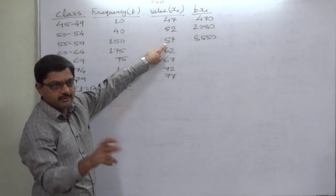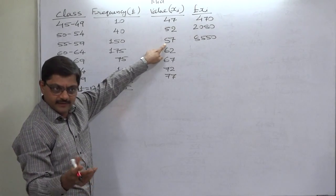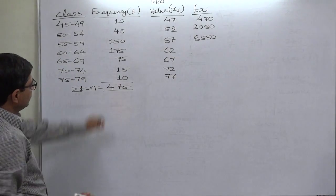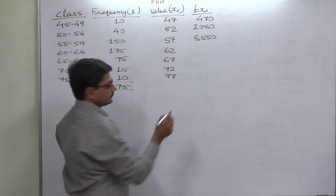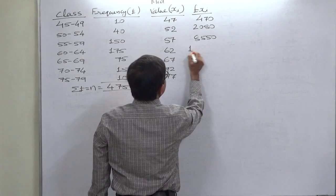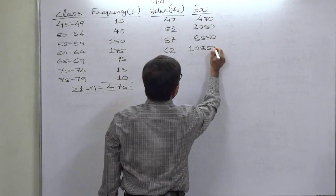5700 plus 2850 comes to 8550. Now 62 into 175, 10,850.